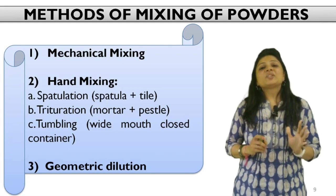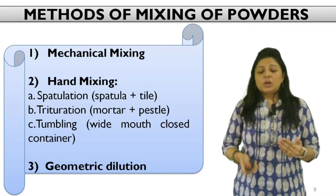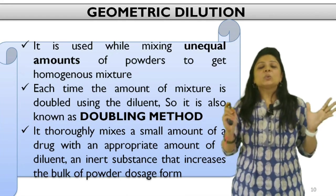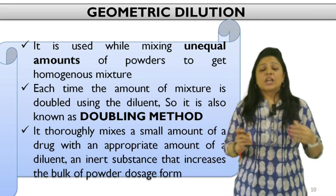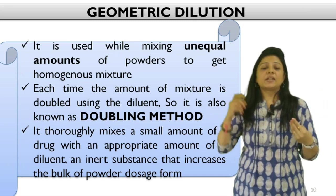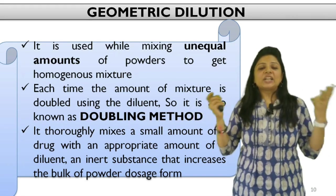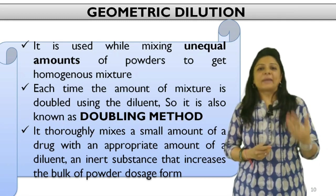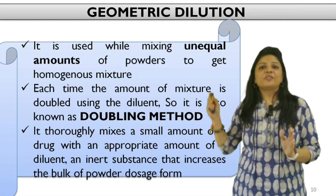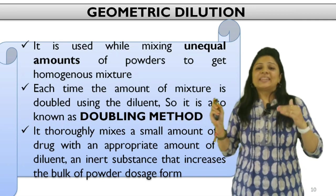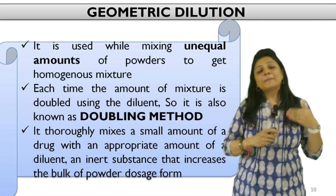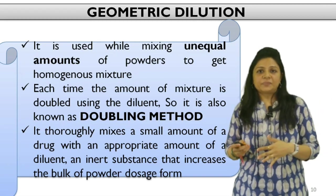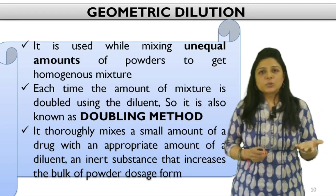The third method is the geometric dilution method. This method is preferred when you have to mix unequal quantities of solid ingredients — if you have one ingredient in very small quantity and another in very large quantity, such uneven proportions can be mixed properly using this method. You require one inert diluent that is mixed stepwise with the medicament in such a way that in each step the original quantity is doubled. That is why it is also known as the doubling method.